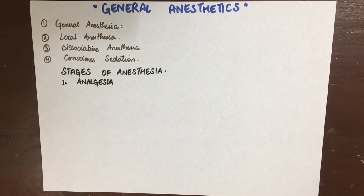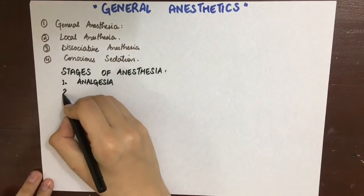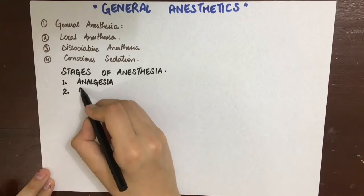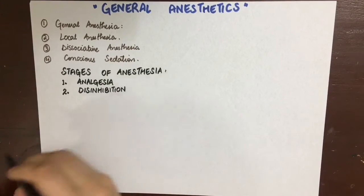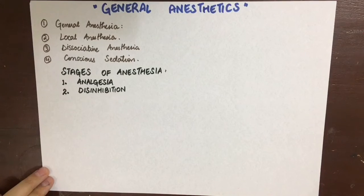The second stage is that of disinhibition. The consciousness is lost. There is increased sympathetic activity such as excitement. Pupils are dilated. Heart rate is increased. Blood pressure is increased. Muscle tone is increased. Respiration becomes irregular, and reflexes are enhanced. Amnesia in this stage is for sure.